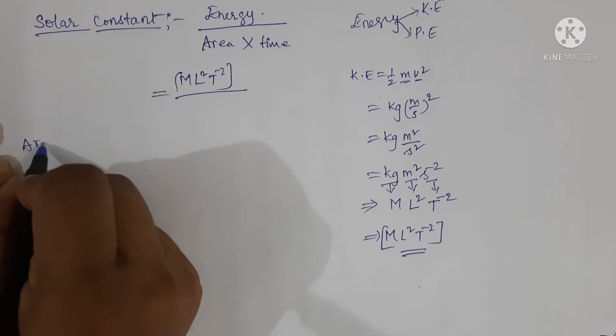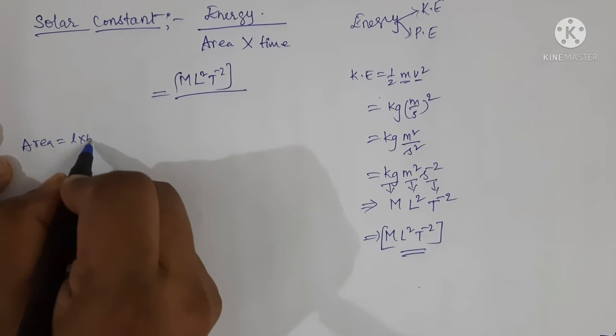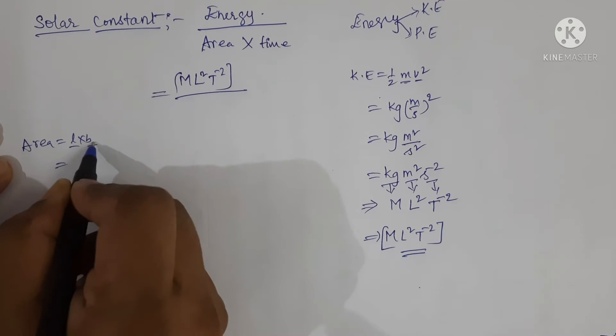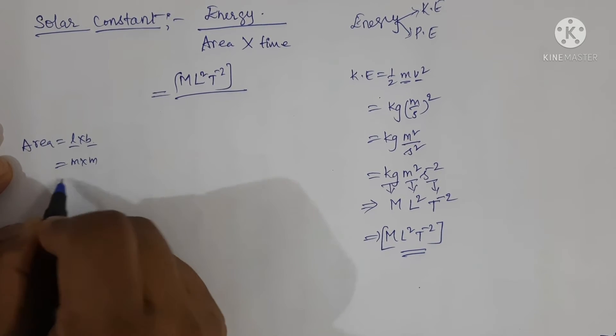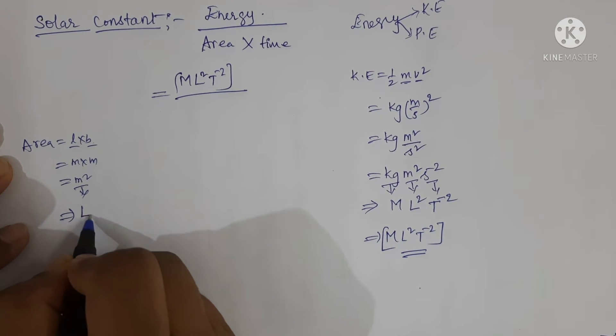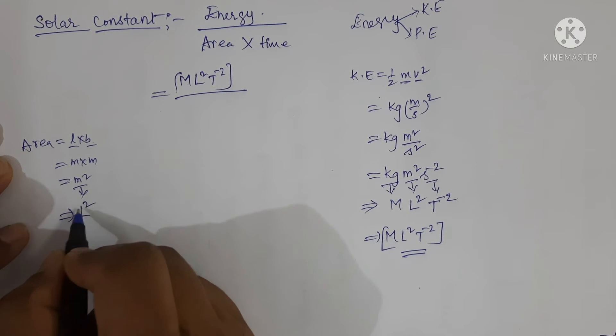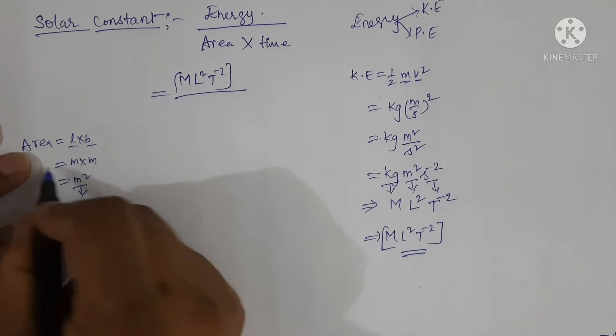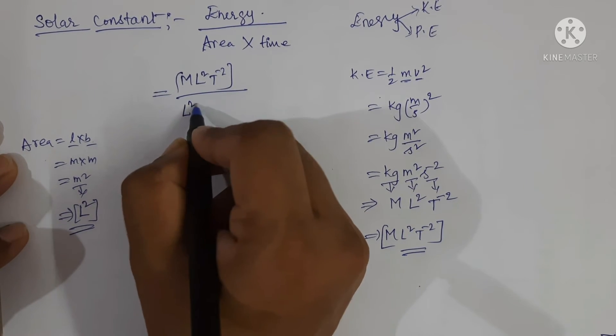See here, area is equal to length into breadth. Write the SI unit for length and breadth: meter into meter, which is equal to meter square. Meter is expressed in terms of length, so L square. This is the dimensional formula for area. Write here L square.